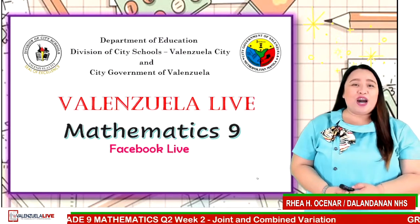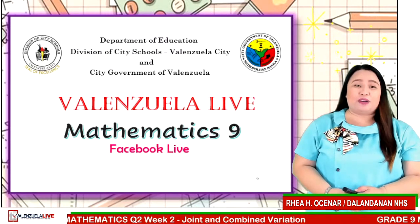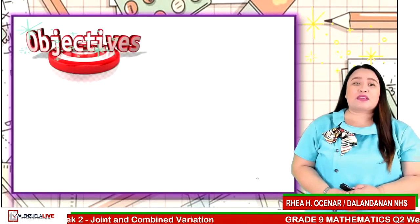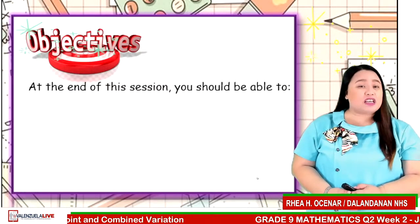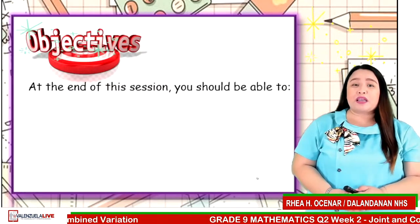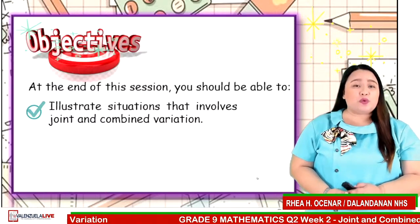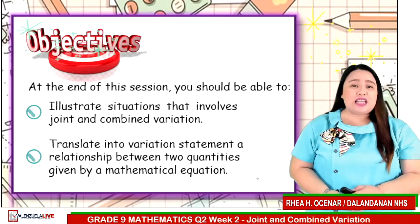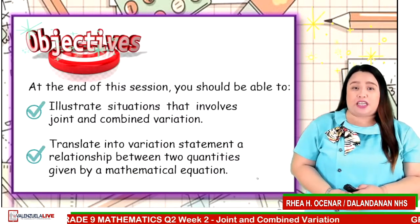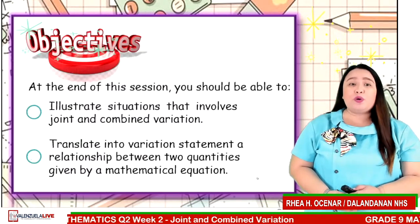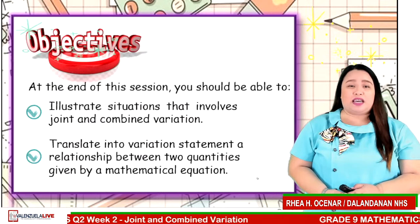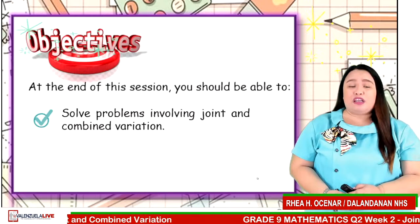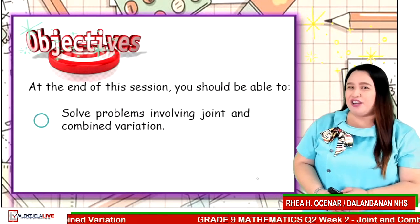Let us begin. Our today's lesson is about Joint and Combined Variation. At the end of this session, you should be able to illustrate situations that involve joint and combined variation, translate into variation statement a relationship between two quantities given by a mathematical equation, and solve problems involving joint and combined variation.